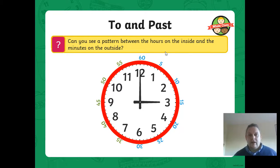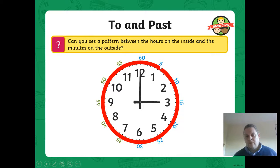Can you see a pattern between the hours on the inside and the minutes on the outside? Well, if we said 1 times 5, we'd get 5. What about 2 times 5? We'd get 10. 3 times 5 would be 15, 4 times 5 would be 20, 5 times 5 would be 25, and 6 times 5 would be 30.